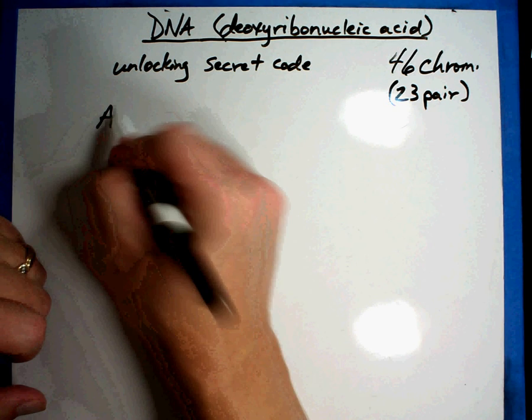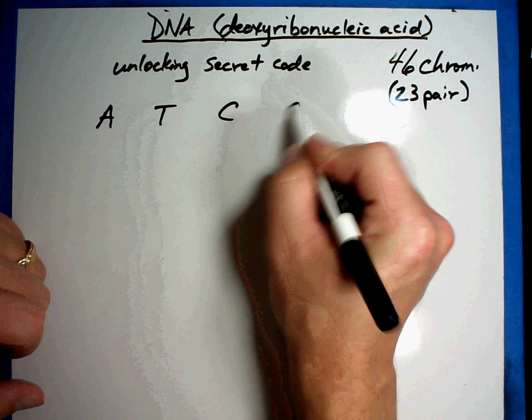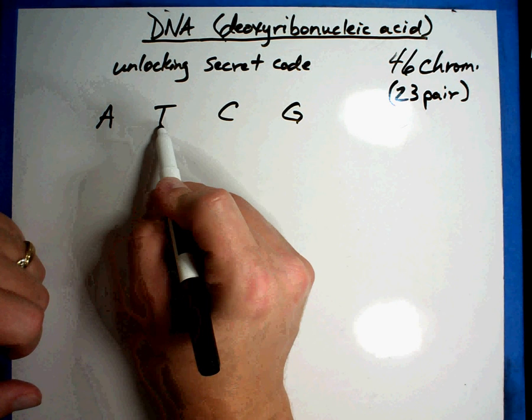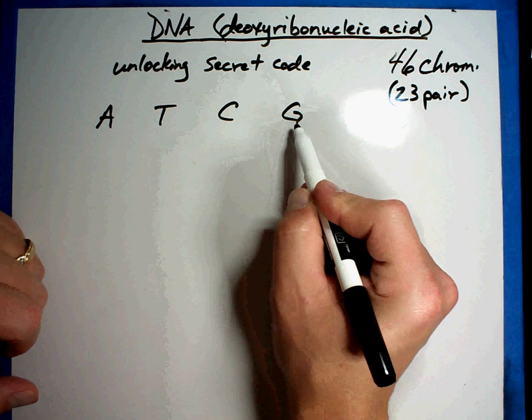The problem with DNA was that we didn't know really what it meant. What we found out was that DNA had four different parts: A, adenine; T, thymine; C, cytosine; and G, guanine. And those were the four things that were found in all of DNA.